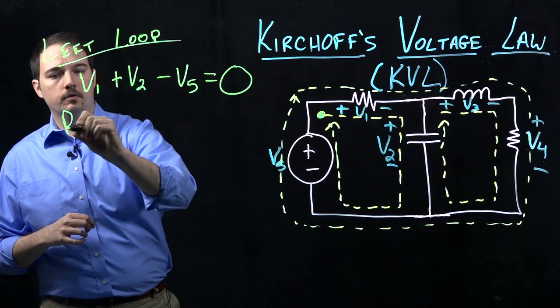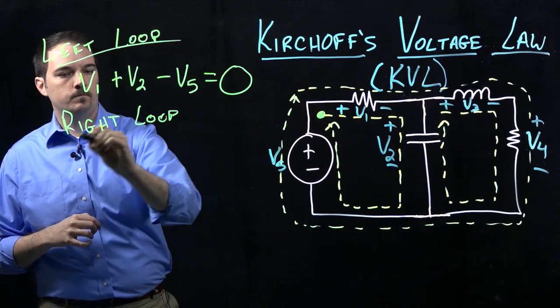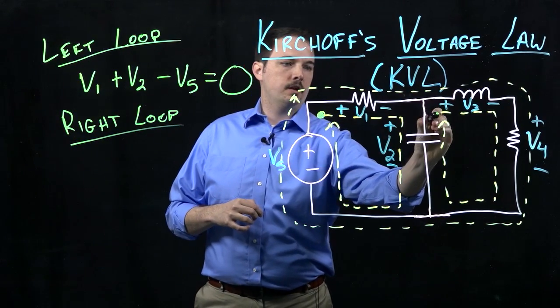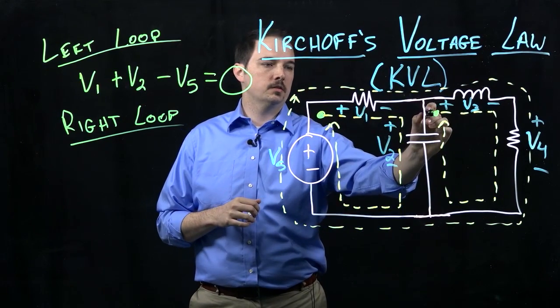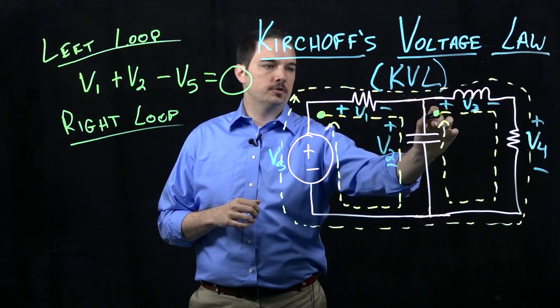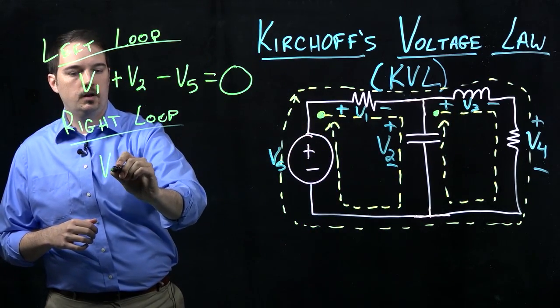Okay, now let me do the same thing here for the right-hand side. So let's start maybe right here. It doesn't matter where I start in this loop, I'll start and end at the same place. It's completely arbitrary, but I'll start here. I see that I have a voltage drop V3 as my first one, so that's going to be a positive quantity.